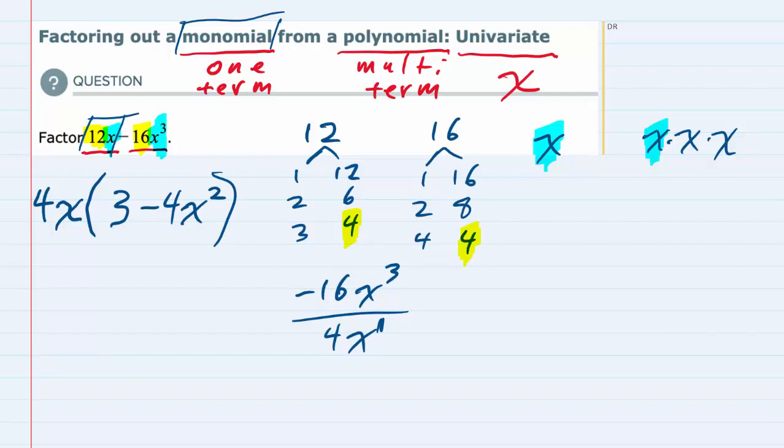Lastly, just to double check: if I were to multiply this back out, distributing 4x times 3 would give me the 12x, which was the original first term. And 4x times minus 4x squared would give me a minus 16x cubed, so that gives me the second term. So we have factored out the monomial.